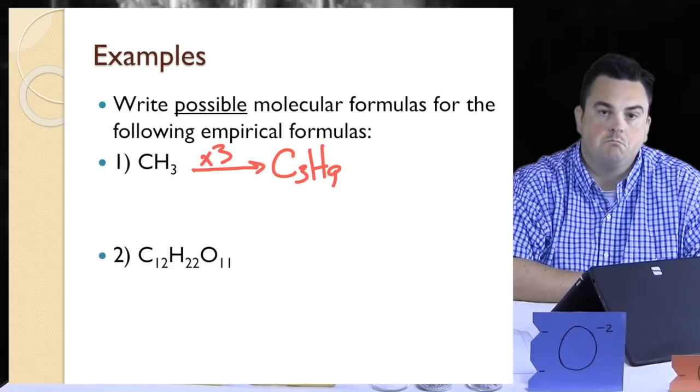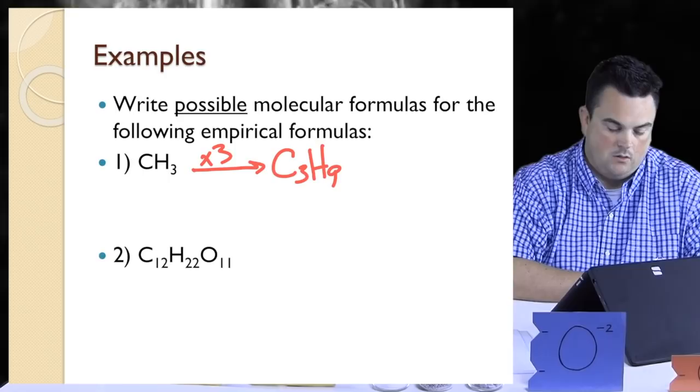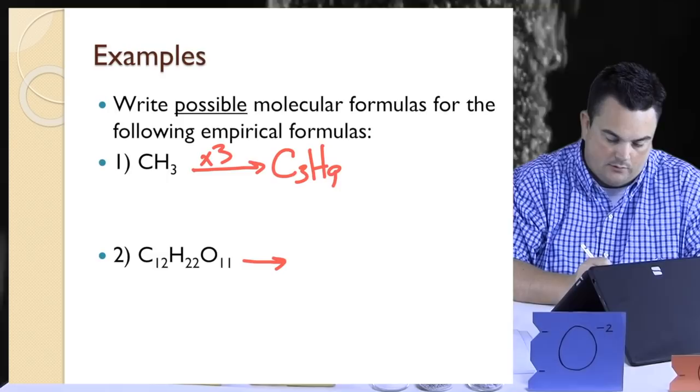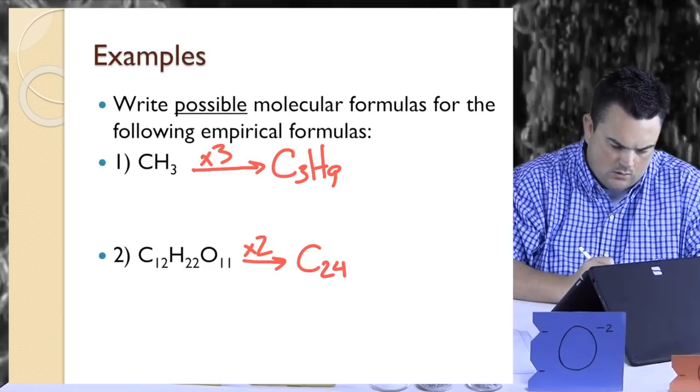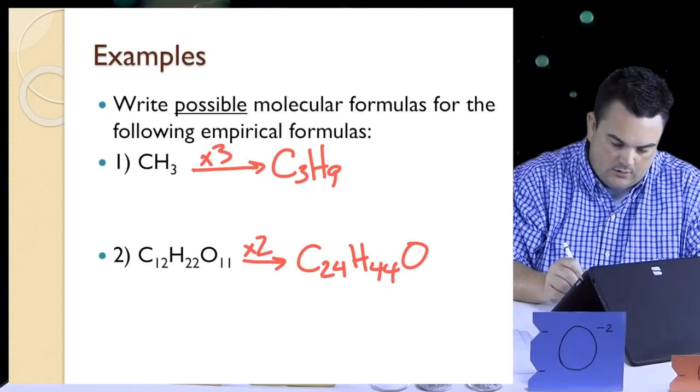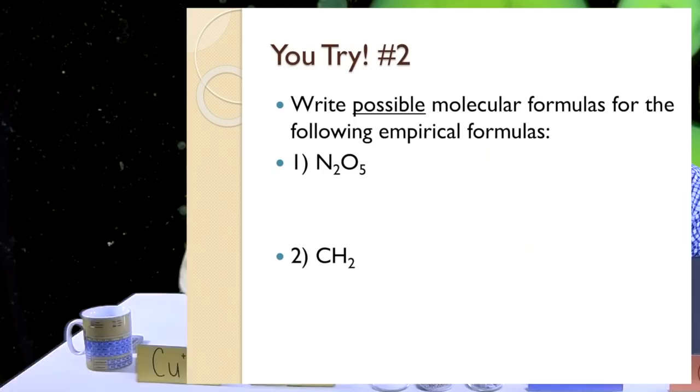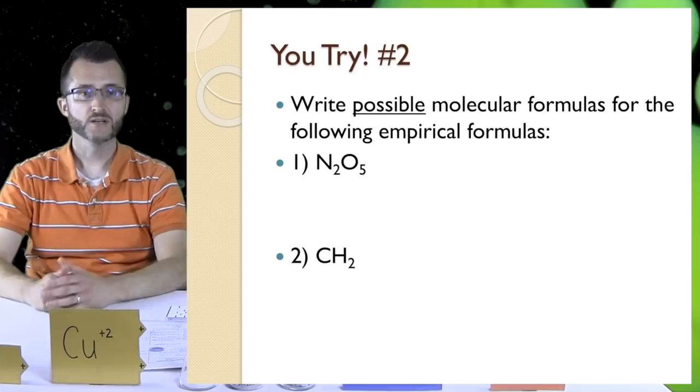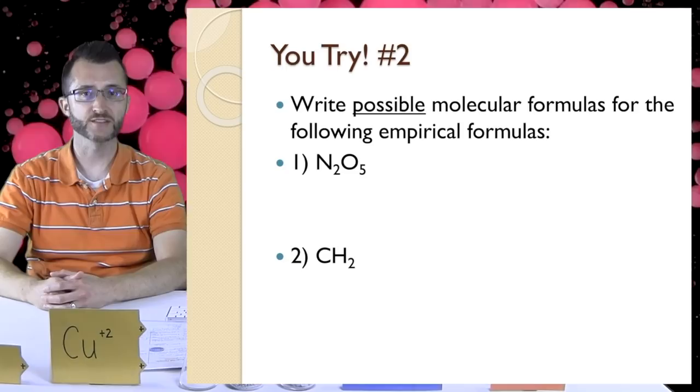Let's do the same thing with number two, C12H22O11. I'm just going to do times 2 because these numbers look a little crazy. That means C would be 24, hydrogen would be 44, and oxygen would then be 22. Good job. You try number 2. Write possible molecular formulas for the following empirical formulas. Give at least two possible molecular formulas for each.